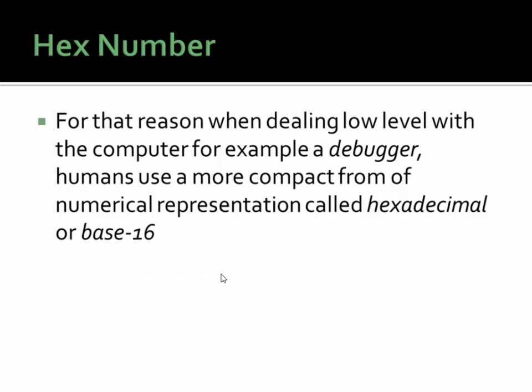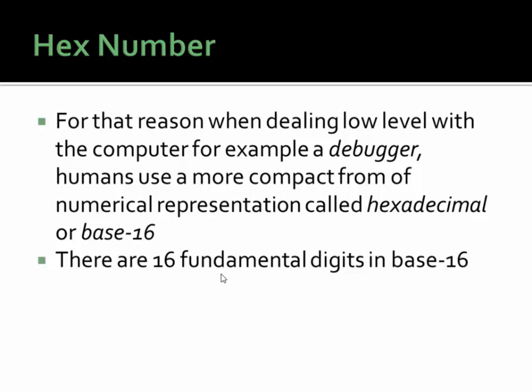For that reason, when dealing with a low-level system like a computer or debugger, humans use a more compact form of numerical representation called hexadecimal, or hex for short, or base sixteen. There are sixteen fundamental digits in base sixteen, as opposed to the two in binary. There's zero through nine that we're familiar with in decimal, or base ten, and in addition to those digits, there's A through F. That gives us sixteen different possible combinations for any digit place in base sixteen, which is why it's called base sixteen.